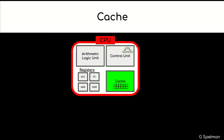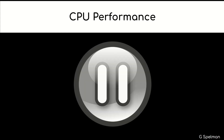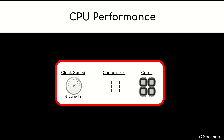Cache is very fast memory inside the CPU. It contains the data and instructions most likely to be needed immediately by the CPU. CPU performance is based on characteristics of the CPU: clock speed, cache size, and cores. We are going to take each of these in turn.